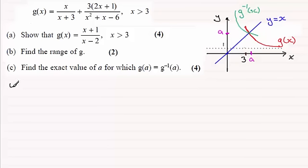So when g(A) equals the inverse of g(A), we've got that therefore g(A) must equal A because it lies on y equals x. And so therefore we get a nice easy equation to solve.